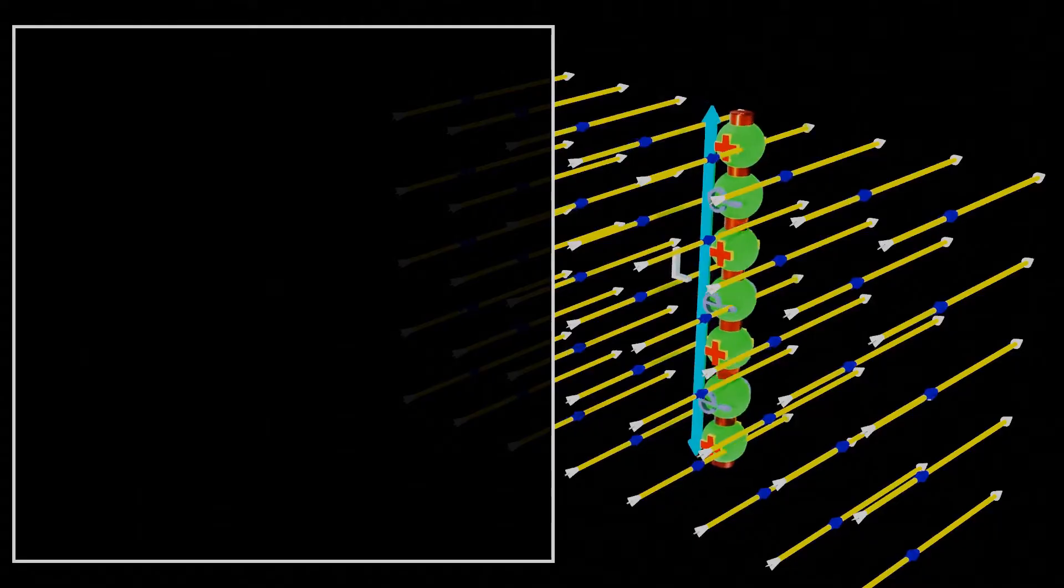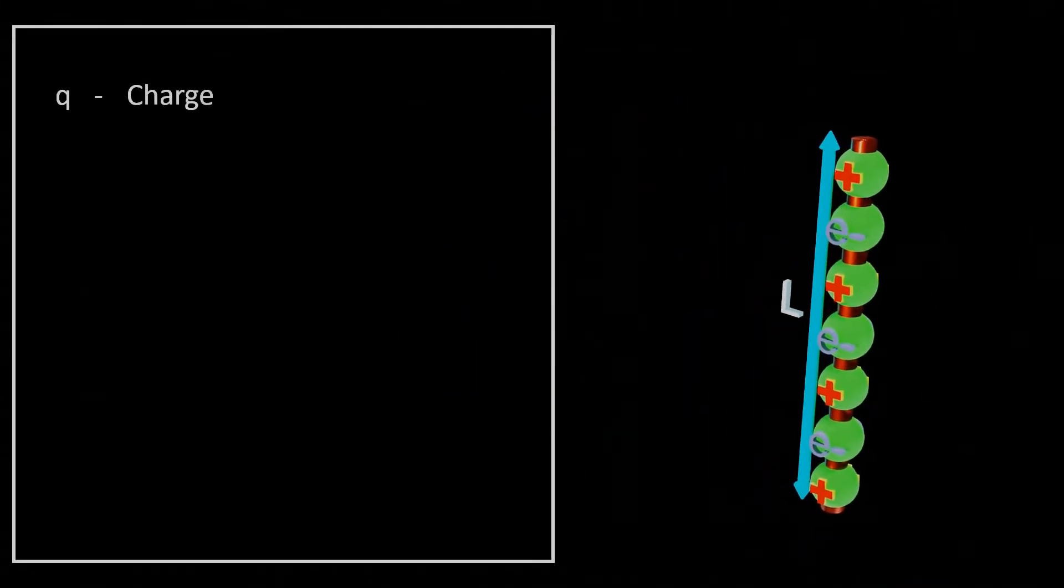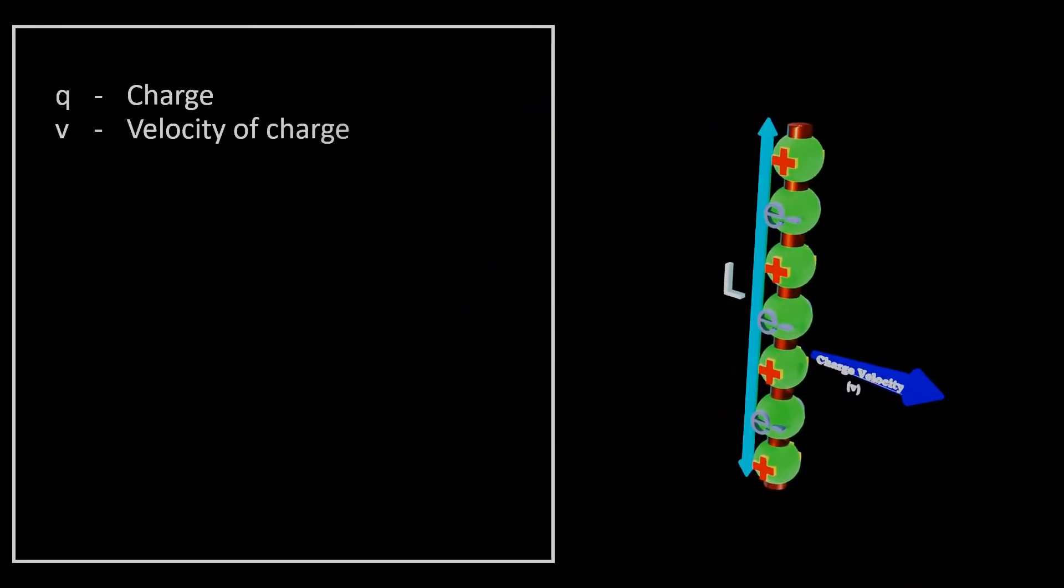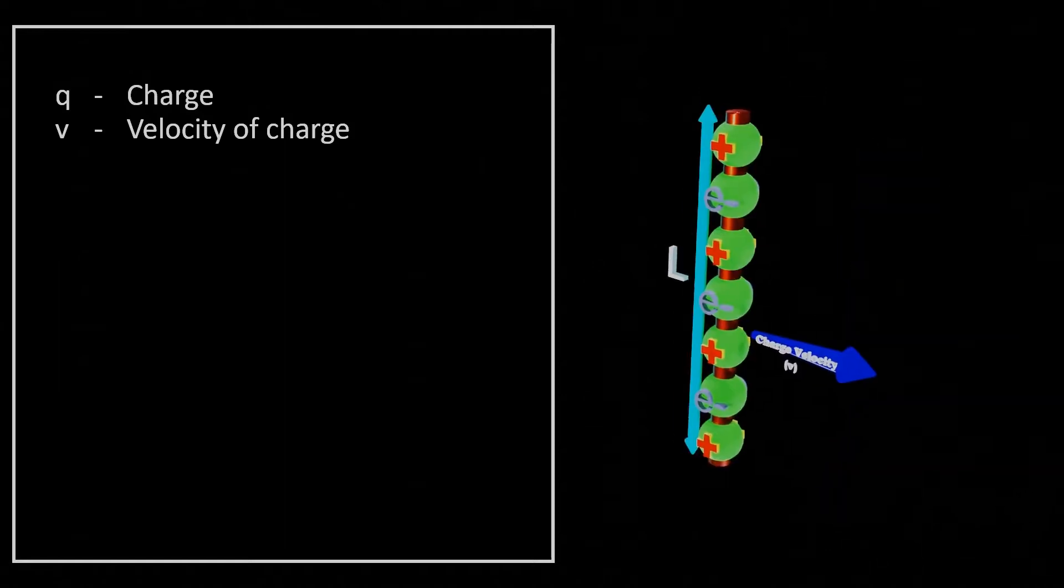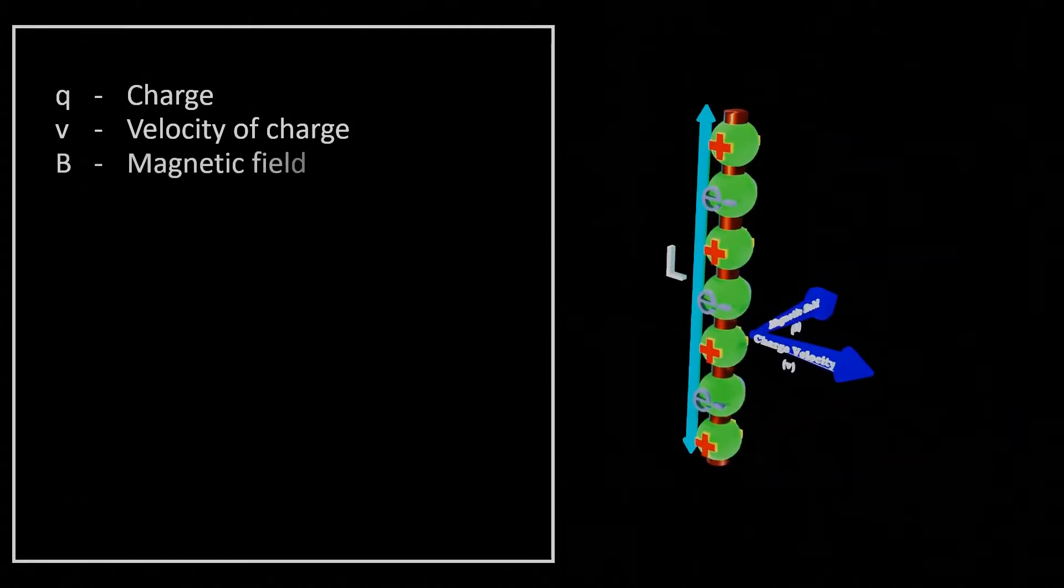In the equation of force, Q is charge, V is the direction of the velocity of the motion of charge with the conductor, and B is the direction of the magnetic field.